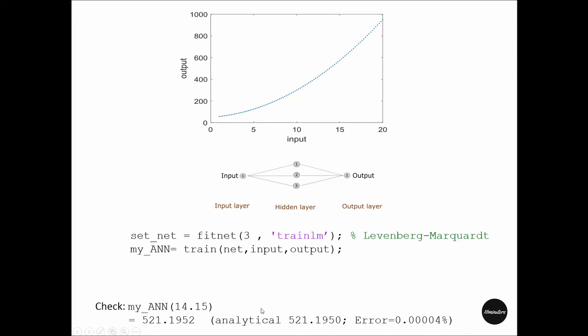Then I checked separately what the exact analytical value is for this input value. When we compared the prediction from this trained artificial neural network output with the analytical output, the error was negligible.